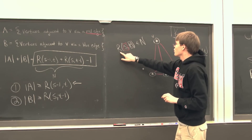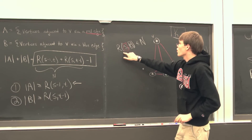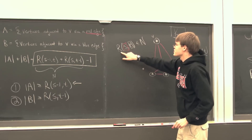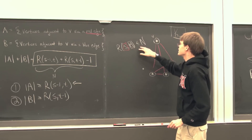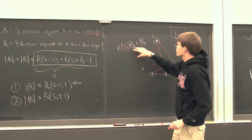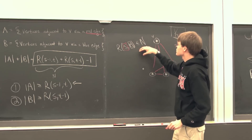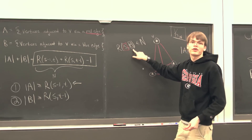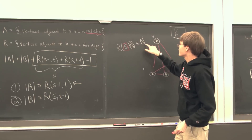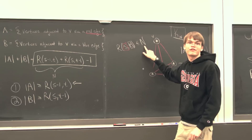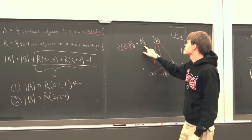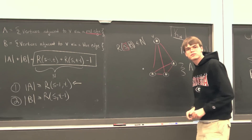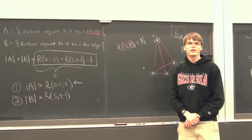We have shown that one of these properties must hold, and we've shown that this holds on a finite number of vertices N. That completes the proof.